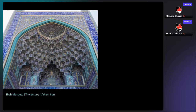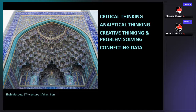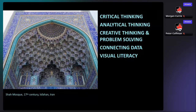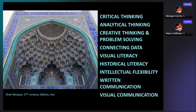The skill set you develop in art history is as broad as the range of approaches you can take. You will learn critical thinking, analytical thinking, creative thinking and problem solving, and connecting data — things associated with any rigorous university degree. But art history also adds more uniquely art-historical skills such as visual literacy: learning to read images as well as the texts that accompany them. This leads to a broader form of historical literacy, intellectual flexibility, written and oral communication, and visual communication — since presenting art history requires incorporating imagery.